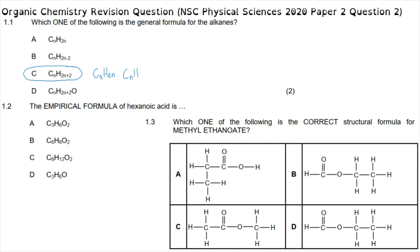Question 1.2 asks for the empirical formula of hexanoic acid. We start by drawing the molecular formula for hexanoic acid — meth, eth, prop, but, pent, hex — and the anoic acid gets the group with a double-bonded carbon and a hydroxyl group, with hydrogens to complete the four bonds on each carbon.